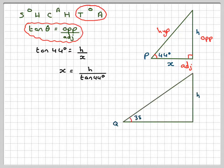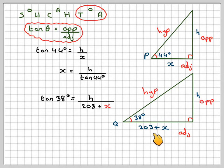Drawing out the larger triangle, so this distance is now 203 plus x. Similar sort of thing: opposite, adjacent, hypotenuse. Again, we're going to use tan, and now we can say that tan of 38 is h over 203 plus x. We'll call that equation 1 and that equation 2.